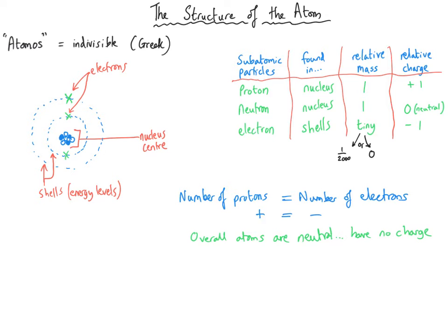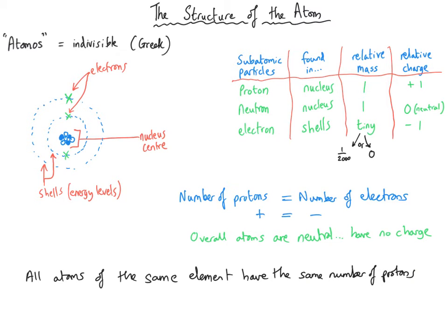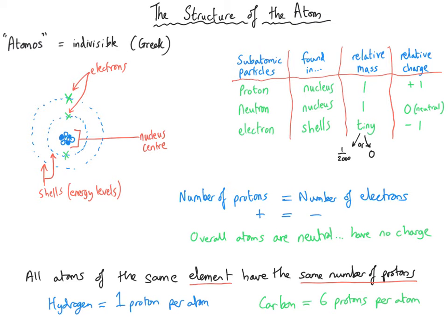One last fact about atoms is that for any given element, all atoms of that element have got the same number of protons. So pick any atom — let's pick hydrogen, because it's the smallest. It's got one proton, and that means all atoms of hydrogen will have one proton. All atoms of carbon have got six protons.